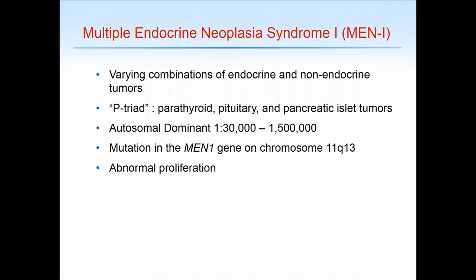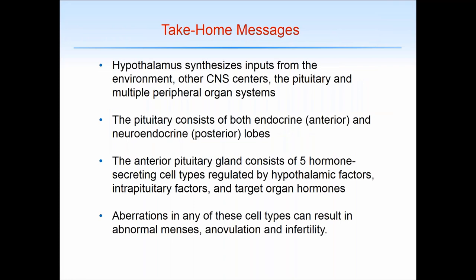After all of that, the take-home messages: first, the hypothalamus synthesizes inputs from the environment, from a wide array of CNS centers, from the pituitary, and from peripheral organ systems. The pituitary gland consists of an endocrine anterior pituitary gland and a neuroendocrine posterior pituitary gland. The anterior pituitary gland has five hormone-secreting cell types that receive input from hypothalamic factors, intrapituitary factors, and target organ hormones. Aberrations in any of these pituitary cell types can result in abnormal menses, anovulation, and infertility — although the mechanisms by which this occurs are not completely understood and definitely deserve more study.